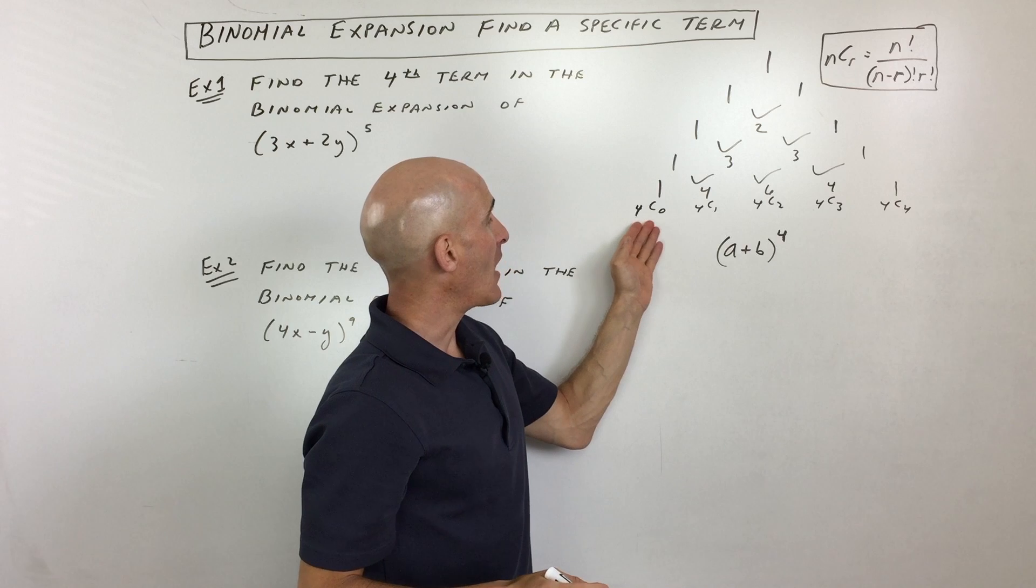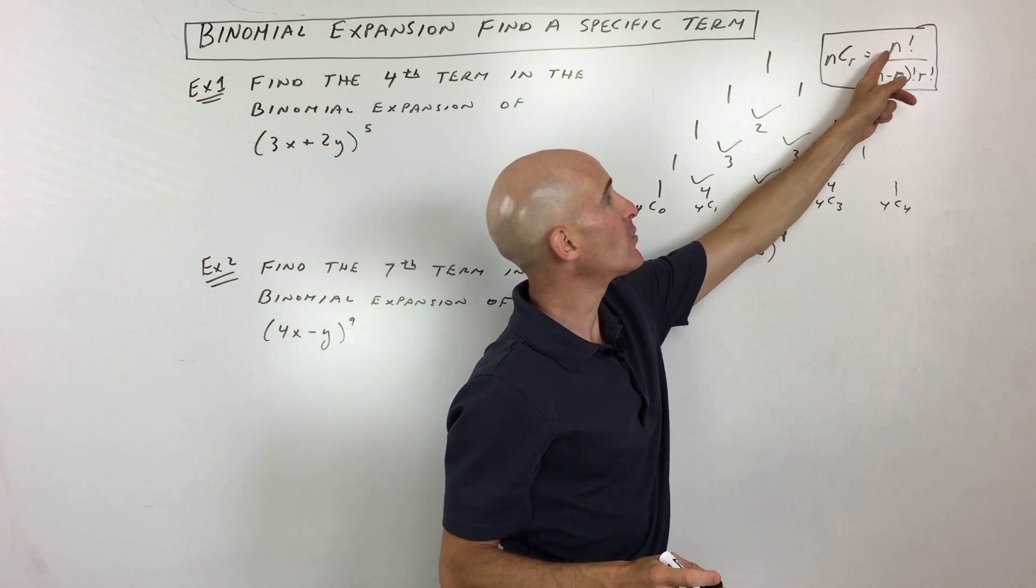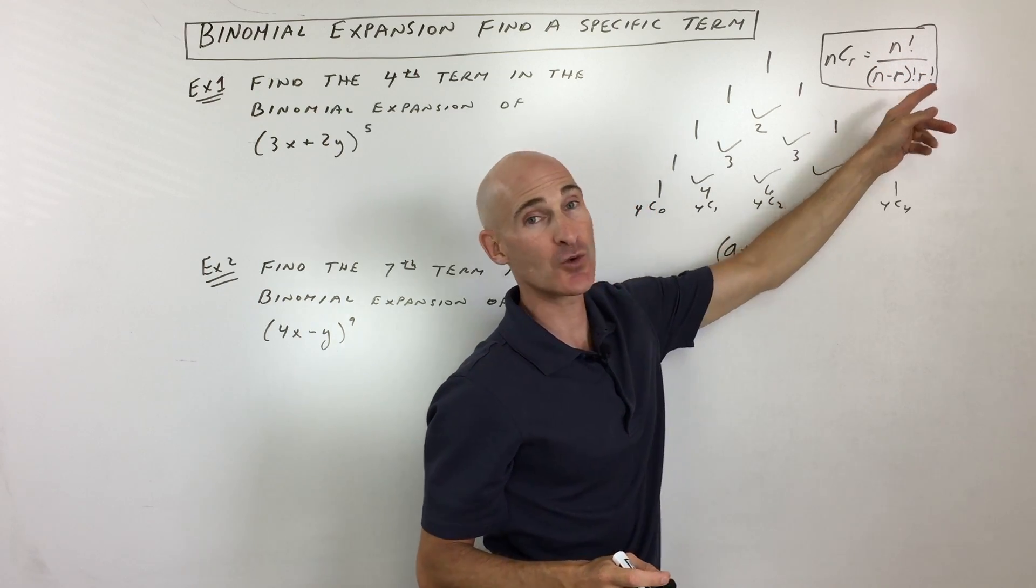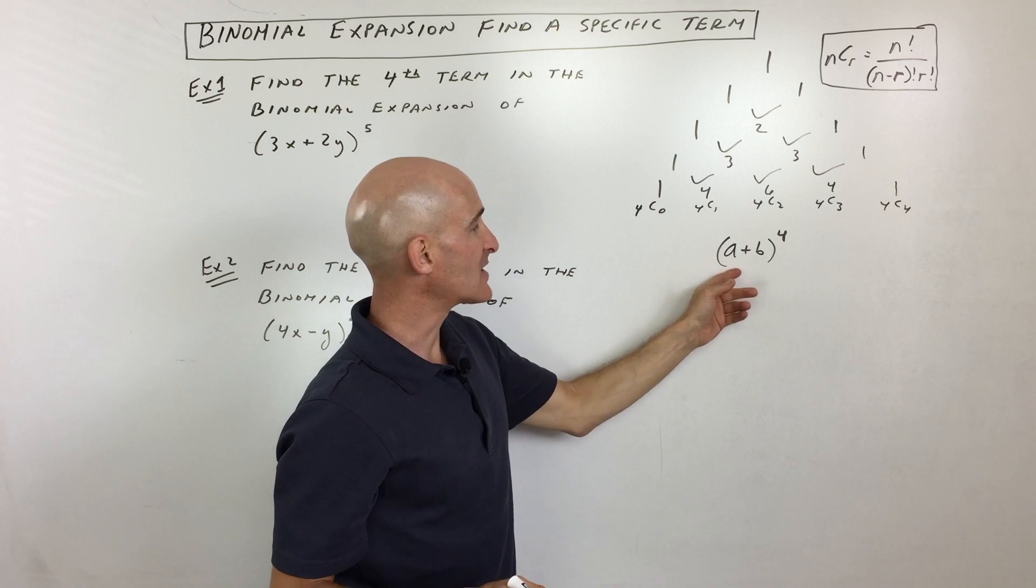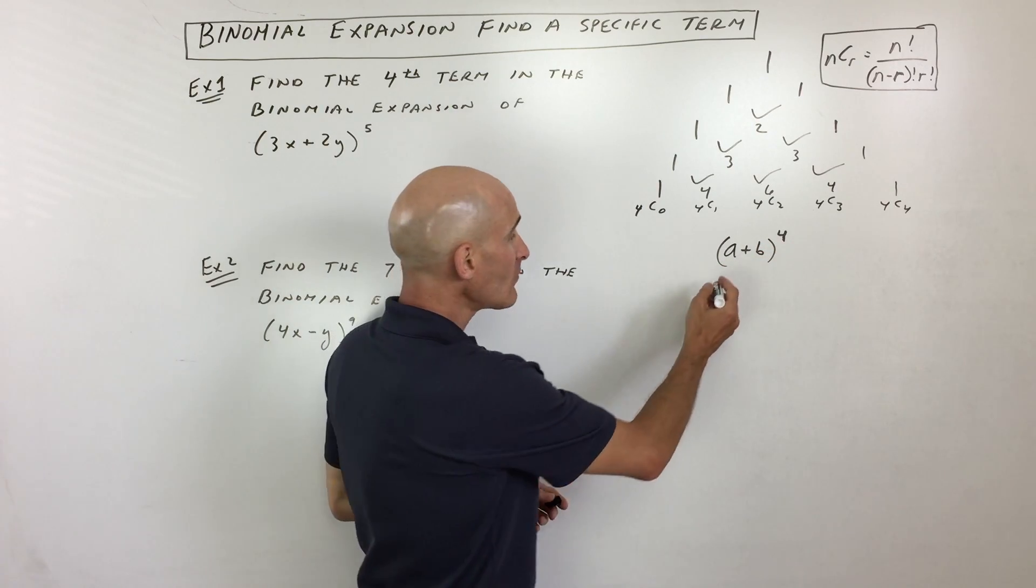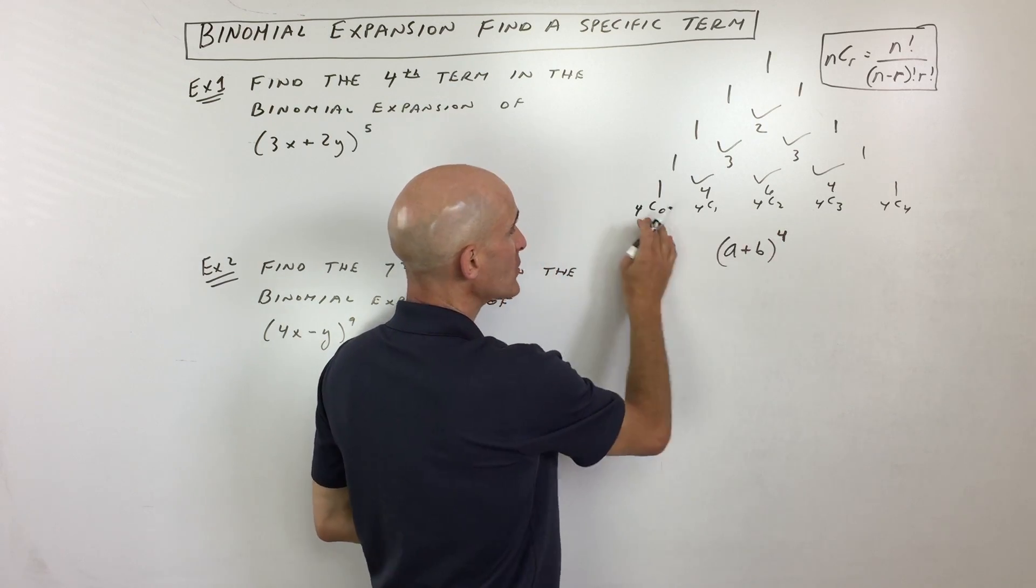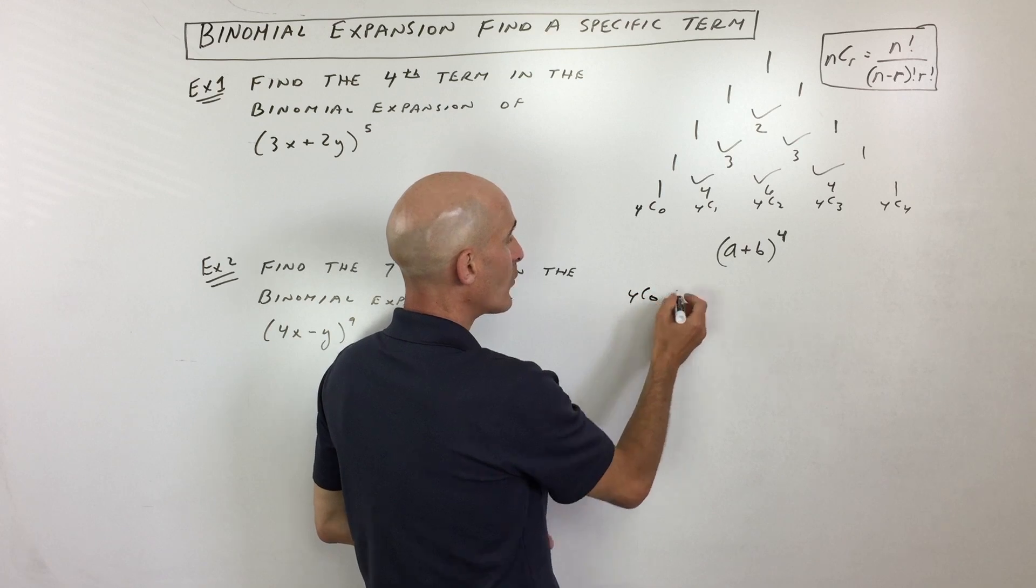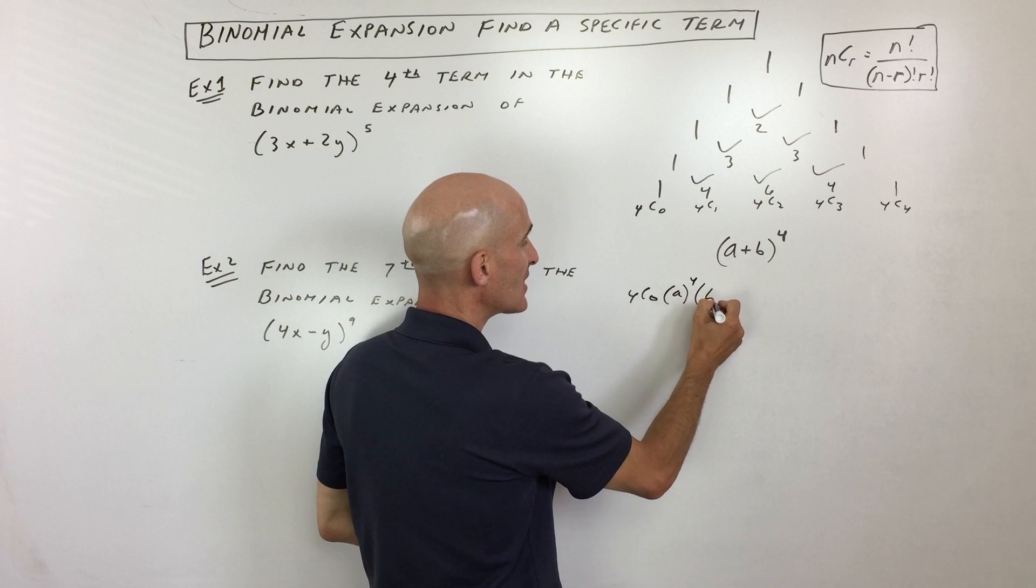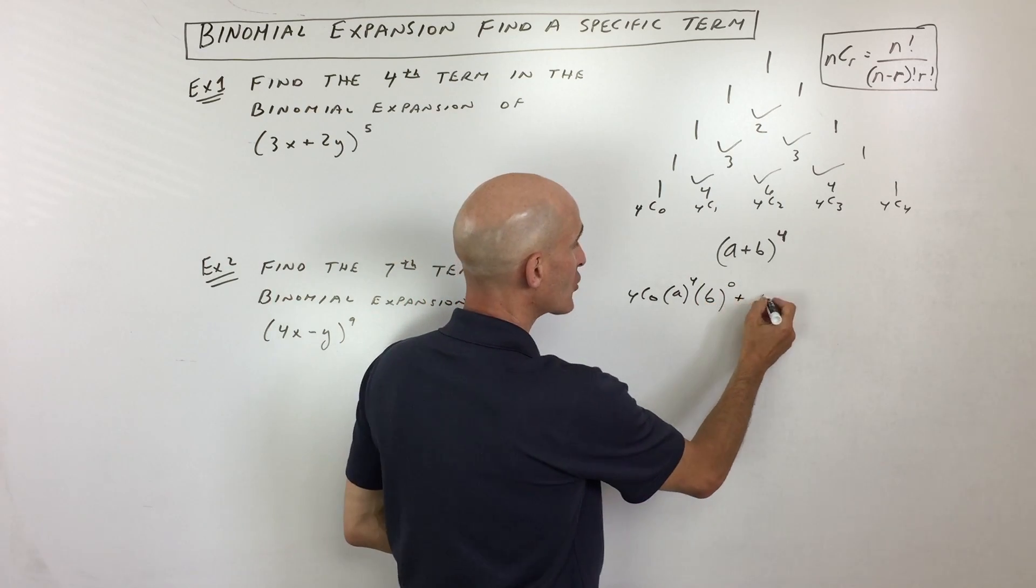Now when you work with combinations, we use this formula here, nCr equals n factorial over n minus r factorial, r factorial. So I'll give you an example. Like say if we wanted to expand out a plus b to the fourth power. Well, what we can do is we can say, well, we're on the fourth row, so we're going to do 4 choose 0. And then what you do is you take the first term, a, to the fourth power, and you take the second term, b, to the zeroth power.